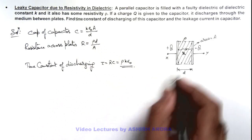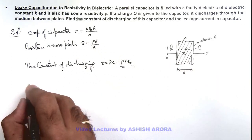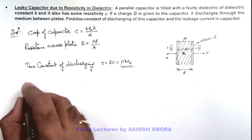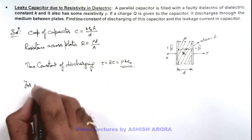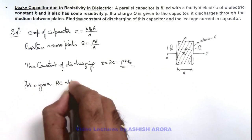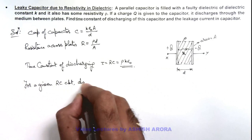So in this situation if we calculate the leakage current in case of discharging of a charged capacitor, then we know for a given RC circuit, the discharge current is given as follows.